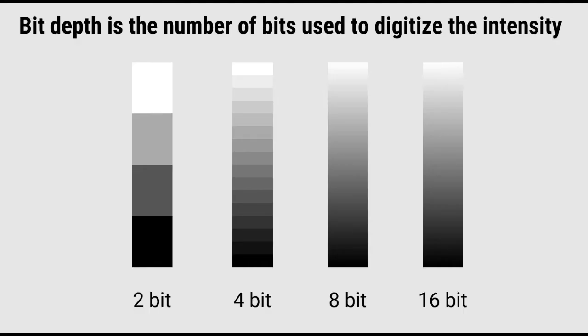Now the number of gray levels, or the number of bins that are supported by the camera, is called the bit depth. The bit depth is the number of bits used to digitize the intensity.